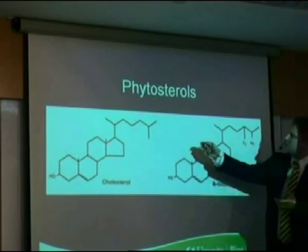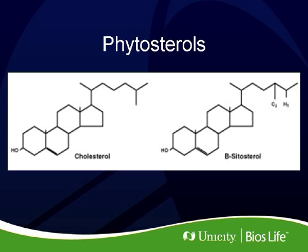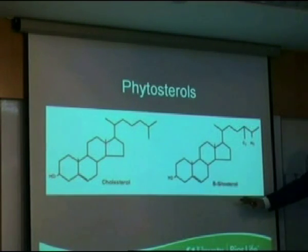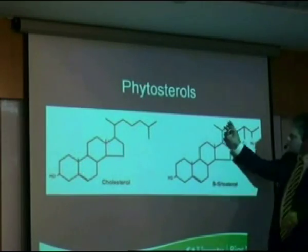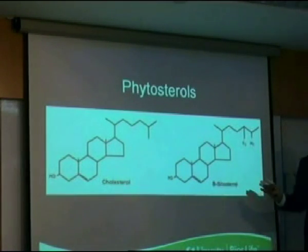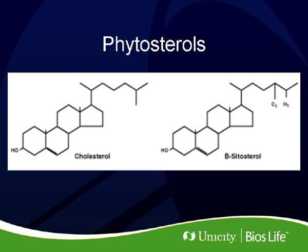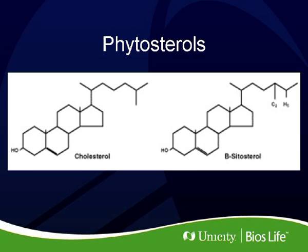Phytosterols are called phytosterols because they are from plants. Sterols is a class of components — cholesterol is also a sterol. Here you see the major sterol from plants called beta-sitosterol. If you look at the structure of phytosterol and the structure of cholesterol side by side, you can see the difference is very small. The rest is almost identical, and that's the key to the mechanism of phytosterols — our body also thinks they look nearly the same.